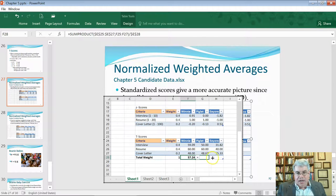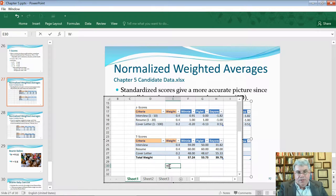So, I am going to drag that over and calculate it for Piglet and Eeyore. Piglet has 53.7, and Eeyore has 39.79. So, it looks like Winnie is the best candidate.